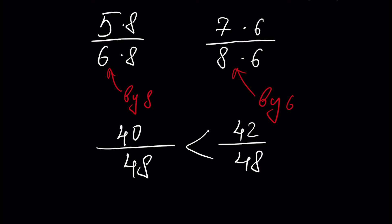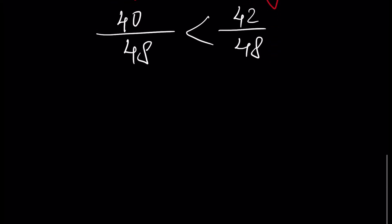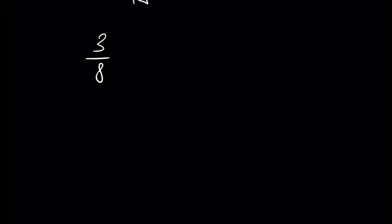Now let's find a common denominator for three fractions. For example, we have three fractions: 3 over 8, 5 over 6, and 2 over 5. We want to transform all three fractions so that we have equivalent fractions but with the same denominator. This process is called finding the common denominator for three fractions.